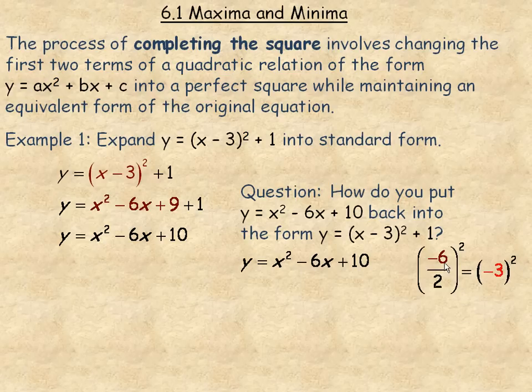Negative 6 divided by 2 and then square it. Negative 6 divided by 2 is negative 3, and so when we square negative 3 we get 9.